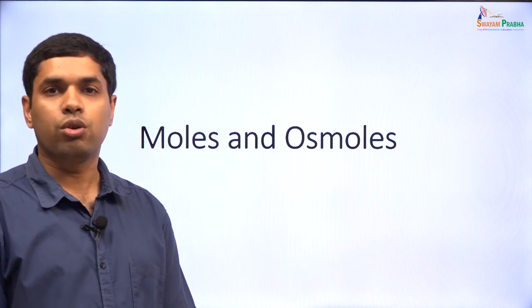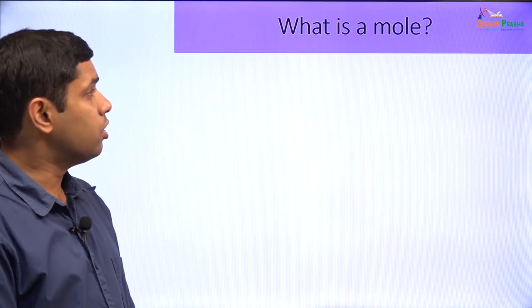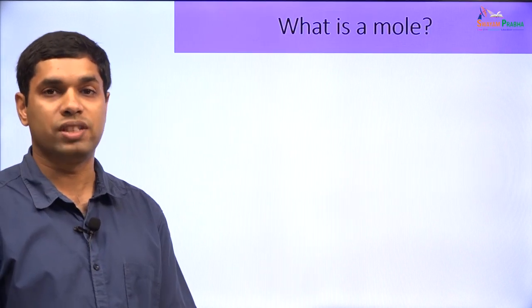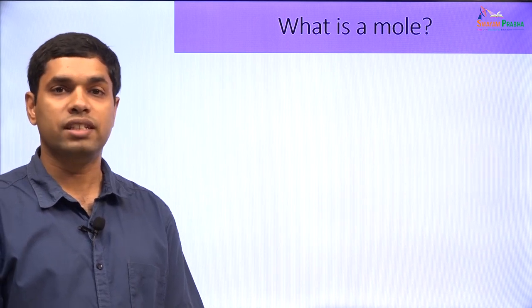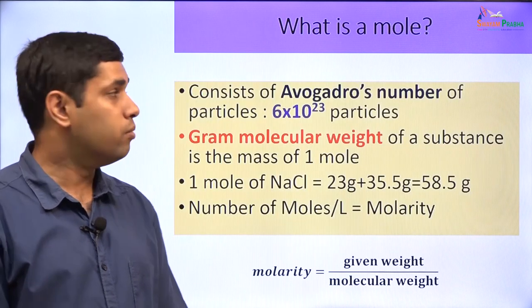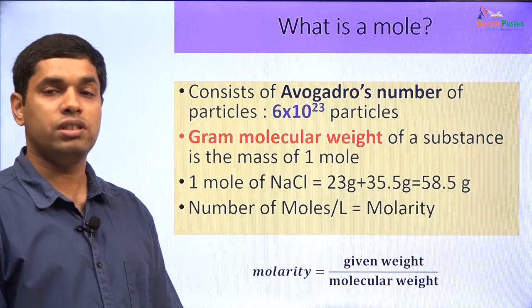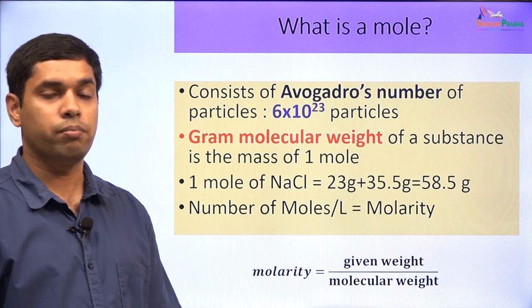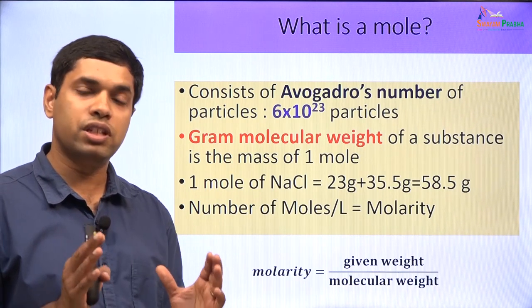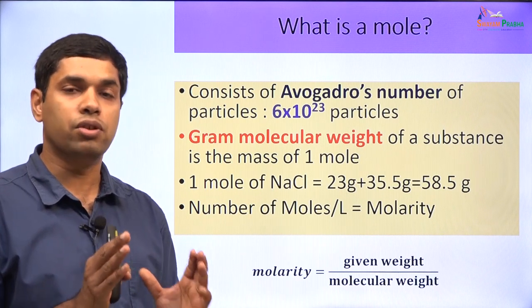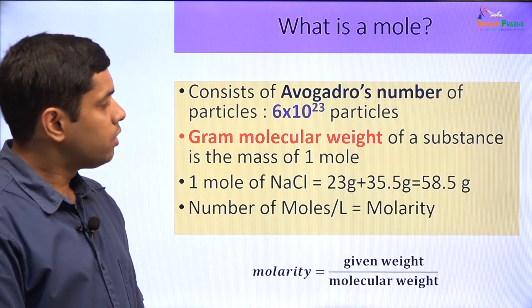Now let us start off with the basic definitions. What is a mole? What is a mole of a substance? As you must have already studied in high school, a mole contains Avogadro's number of particles which is 6.023 x 10²³. So a mole of a substance has a particular number of particles and that is Avogadro's number of particles.